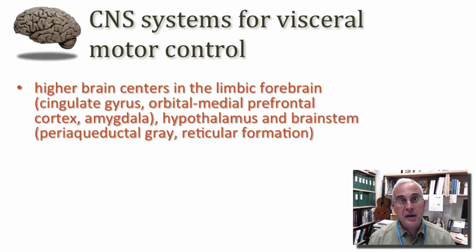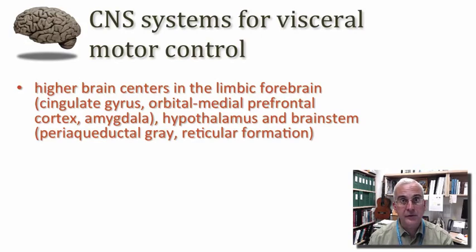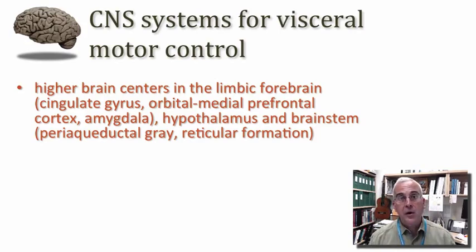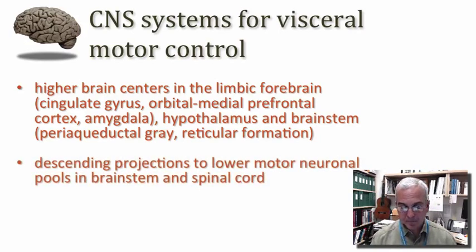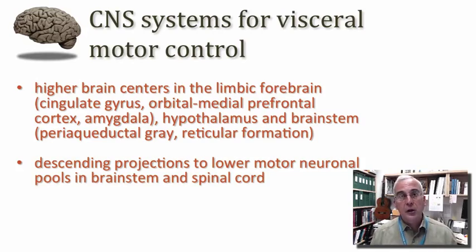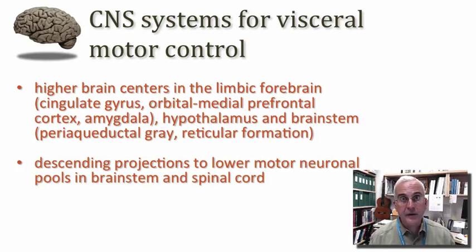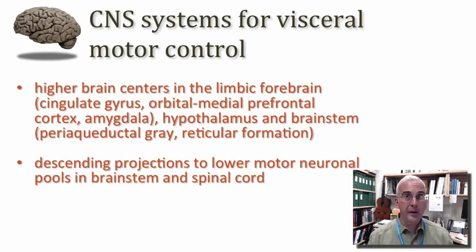One key structure that mediates the effect of these telencephalic structures on our motor elements in the brainstem and spinal cord is the hypothalamus. Working closely with the hypothalamus are networks of neurons in the reticular formation of the brainstem. Together, we might call these higher brain centers, and they interact with our lower motor neuronal pools that ultimately convey signals out to the effector structures in the viscera. The connections between the higher brain centers and the lower motor neuronal pools are therefore important.